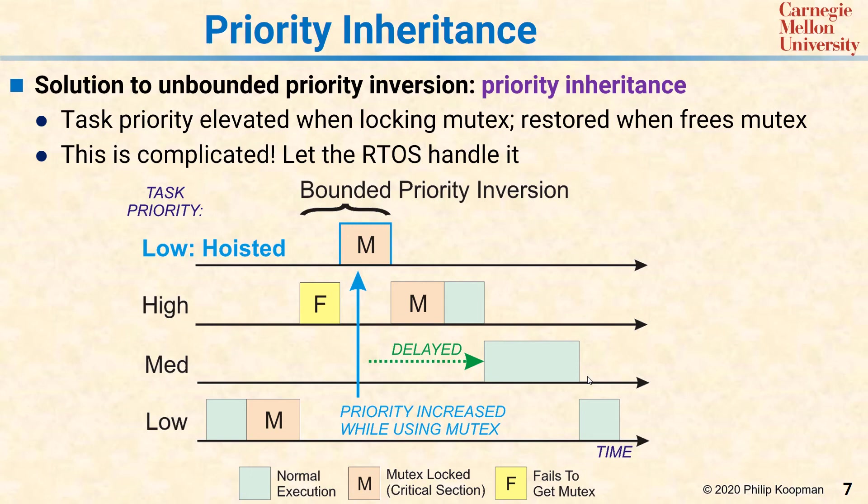So again, what's happened here is that when the mutex is grabbed by a low priority task, nothing happens yet. When some higher priority task wants the mutex and is waiting for it, rather than just giving up and waiting, the operating system grabs the low priority task.